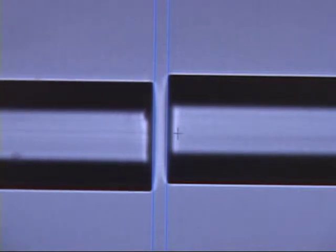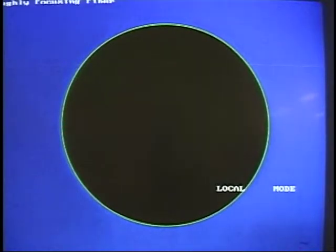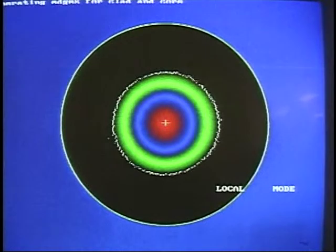Geometric testing includes tests for core, clad, and coating diameter, non-circularity, and core-to-clad offset. Tight tolerance control of these geometric parameters ensures minimal splice and connectorization losses.